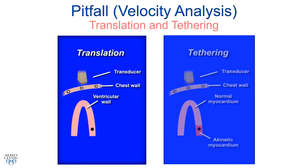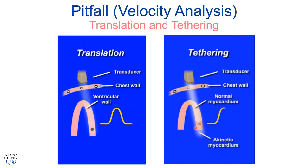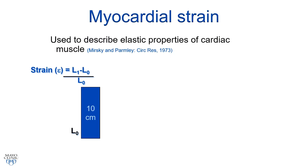There are pitfalls to velocity analysis: translational motion and tethering. With translational motion, if the whole heart moves within the chest wall, there will be velocity associated with that motion that may not represent true contraction. With tethering, a sample volume placed in an akinetic basal segment may show velocity because the functioning mid and apical segments tug and pull that basal segment with them — again not representing true contraction. To overcome this, we can look at more local parameters of deformation such as myocardial strain.